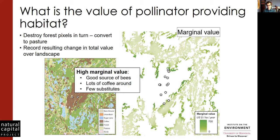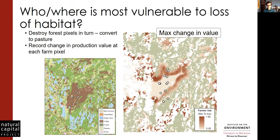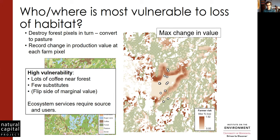High marginal values usually happen where there's already a good source of bees, lots of demand for bees in terms of the coffee, and few other substitutes — no other landscape around. We can also look at if we were to lose forest or convert them, we can change production. This is the change in value, sort of the risk — this is where in the field you'd actually be losing that value. The value of the service requires there to be some user, like demand is needed.